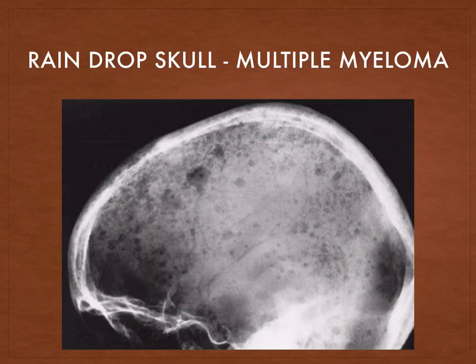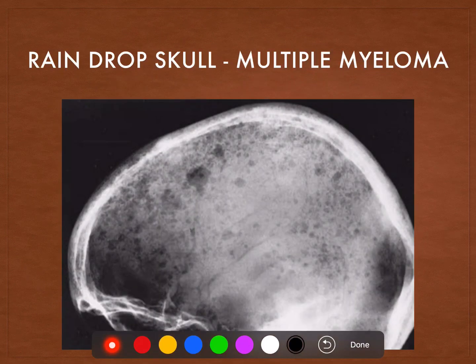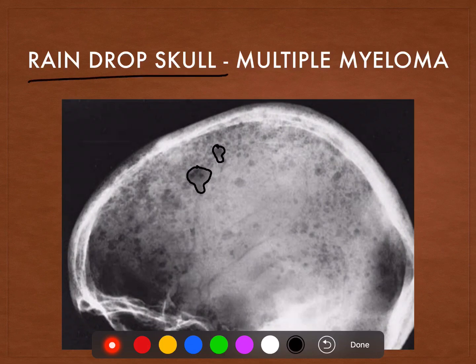In this first X-ray, we see these multiple well-defined punched out lytic lesions seen scattered throughout the skull. The name of this skull is the raindrop skull and the diagnosis here is multiple myeloma. So, multiple punched out lytic lesions throughout the skull — multiple myeloma.